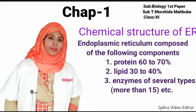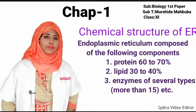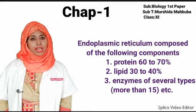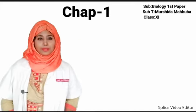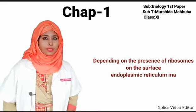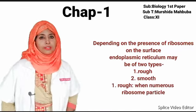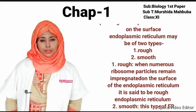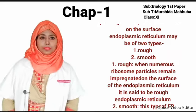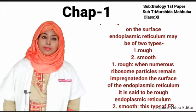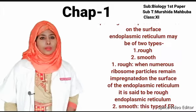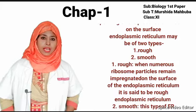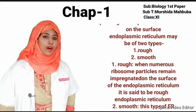Chemical structure of endoplasmic reticulum: It is composed of protein 60–70%, lipid 30–40%, and enzymes of several types. Types of endoplasmic reticulum: Depending on the presence of ribosomes on the surface, it may be of two types: rough and smooth. Rough endoplasmic reticulum has numerous ribosomes impregnated on its surface. Smooth endoplasmic reticulum has no ribosomes on its surface.